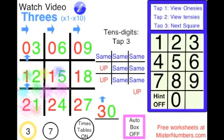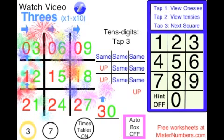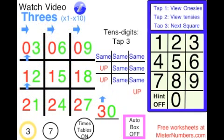3, 6, 9, 12, 13, 18, 21, 24, 27, 30. Yeah.